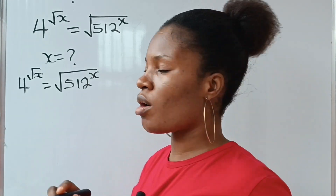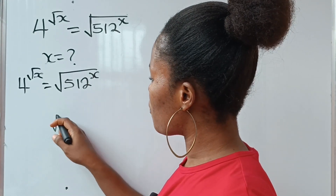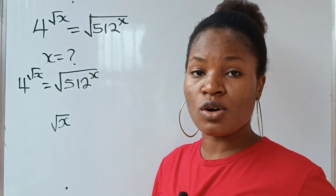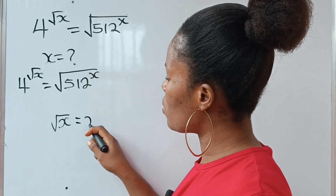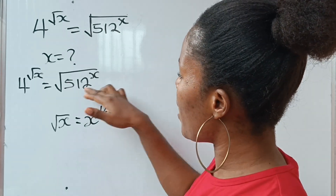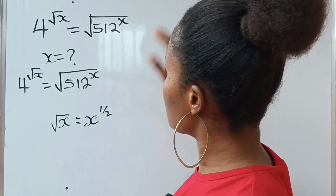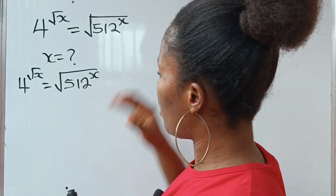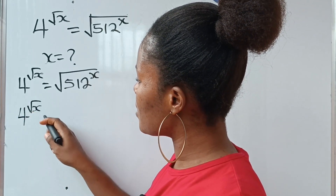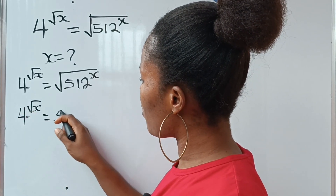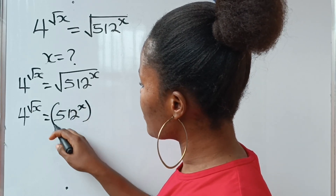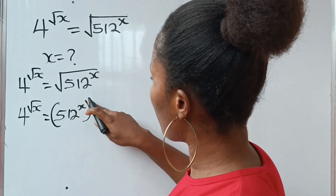Recall that the square root of any number is equal to that number raised to the power of half. So let's rewrite this in that way. That means 4 raised to the power of root x is equal to 512 raised to the power of x, everything raised to the power of half.